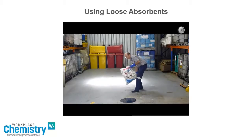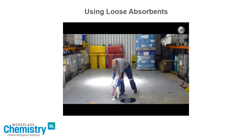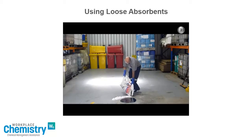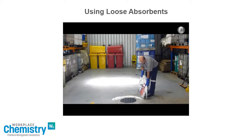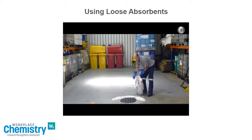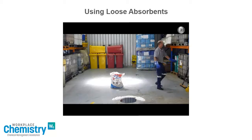Here we have a small oil spill. We can use loose absorbent to stop the spread of the spill by pouring it across the spill's path. We pour the absorbent next to the spill to avoid splashing. This is particularly important when cleaning up hazardous chemical spills.